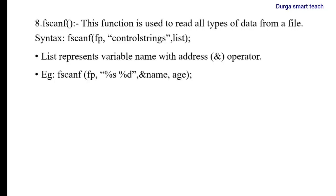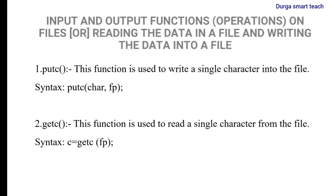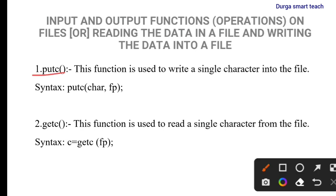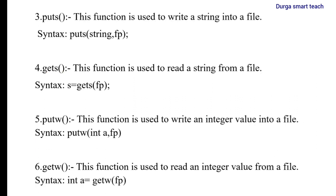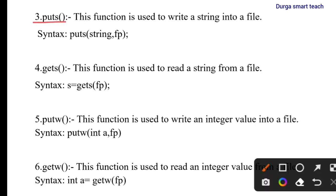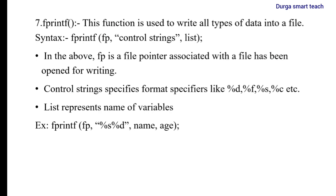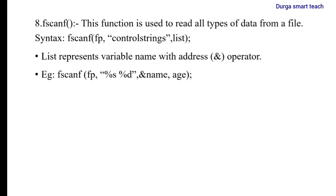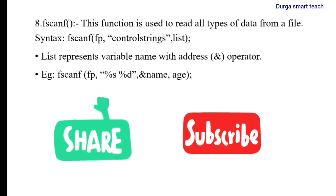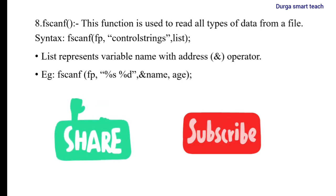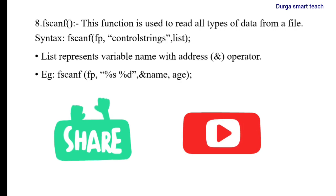So you can perform all input and output operations on files: write or read a single character, write or read a string (collection of characters), write or read an integer value, or write and read all types of data using fprintf and fscanf. These are the important input and output operations for reading and writing data into files. I hope it is clear — if you have any doubts, please comment. For more videos, please subscribe to my channel. Thank you.